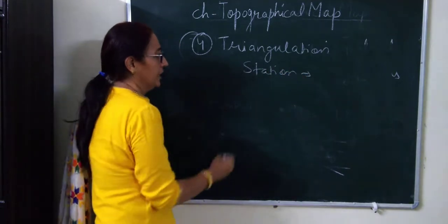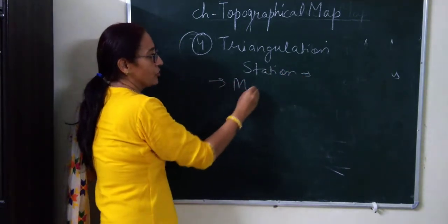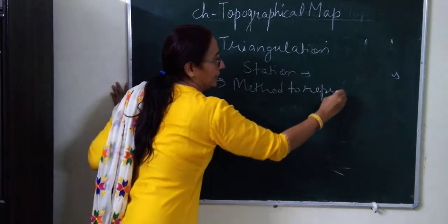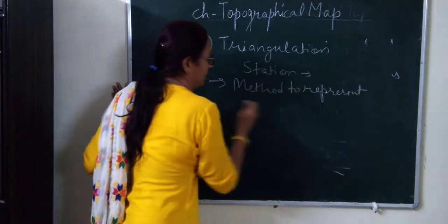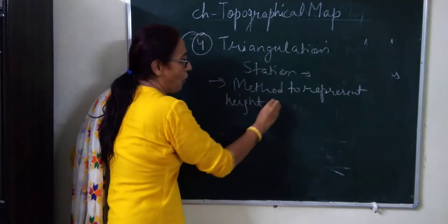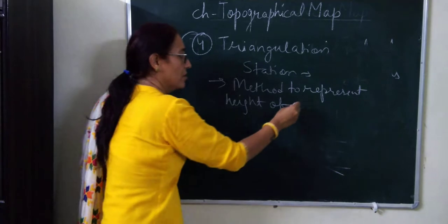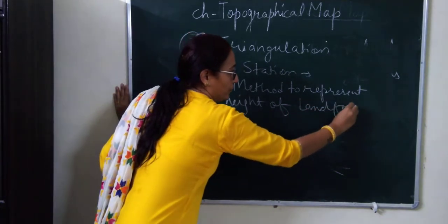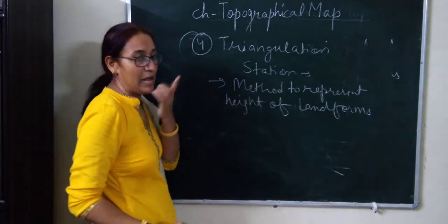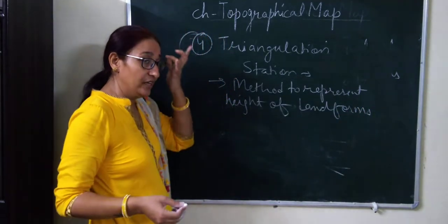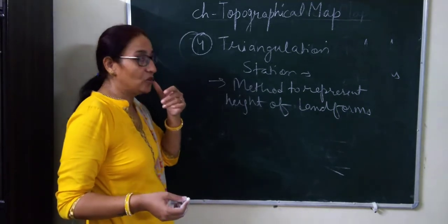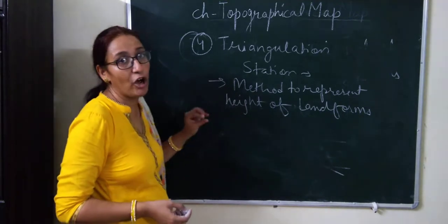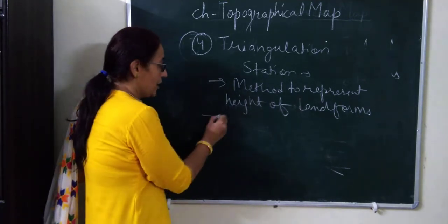Next is triangulation station, also called triangulated height. This is also a method to represent the height of a landform on a topographical map. It can represent the height of any object — a tree, building — but on topographical maps it is primarily used to represent the height of landforms.